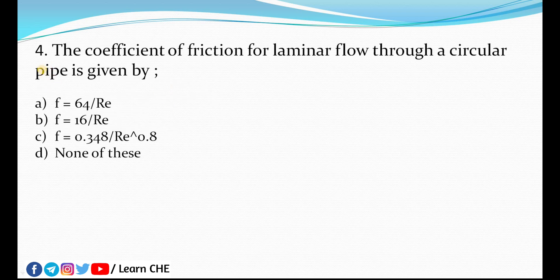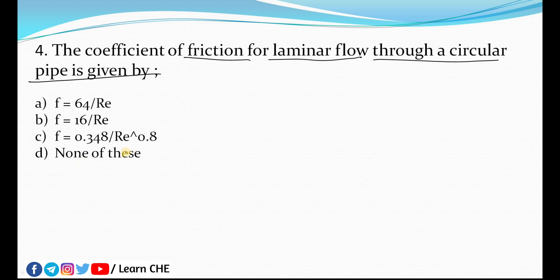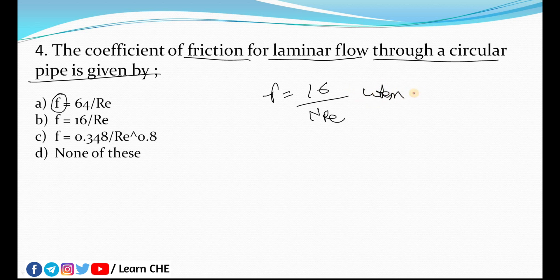The fourth question: the coefficient of friction for laminar flow through a circular pipe is given by — F = 64/Re, F = 16/Re, F = 0.348/R^0.8, or none of these. For laminar flow, the answer is F = 16/N_Re, where N_Re is the Reynolds number. When the Reynolds number is less than 2000, the flow is laminar, and we use this formula. So the answer is B.